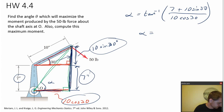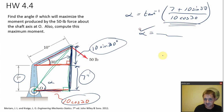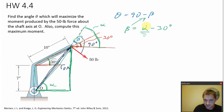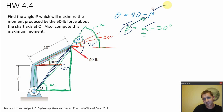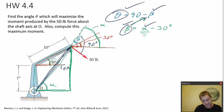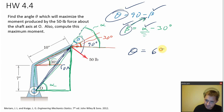Go put that in your calculator to get alpha. Now that I know alpha, I can get beta = alpha minus 30. Now that I know beta, theta = 90 minus beta. Theta comes out to be 65.8 degrees.